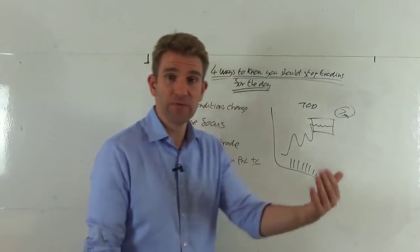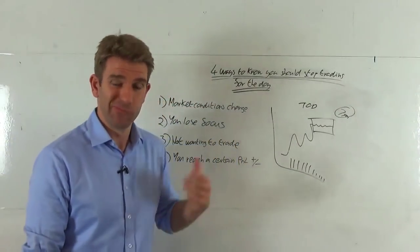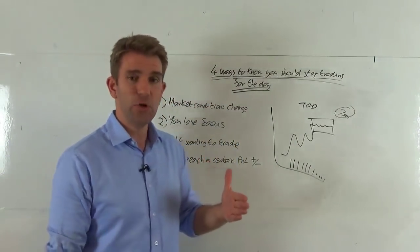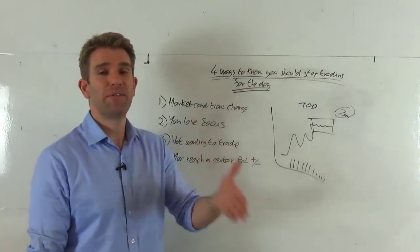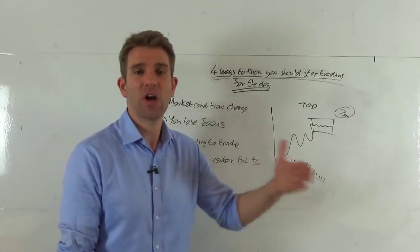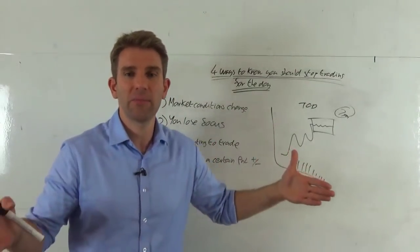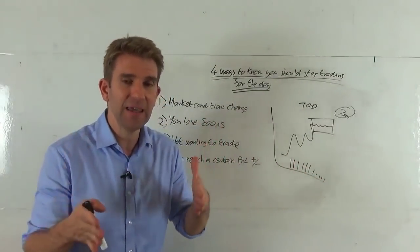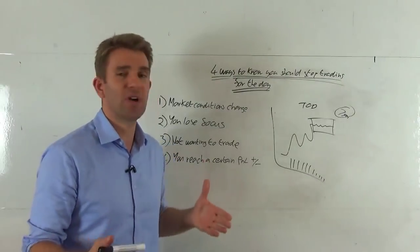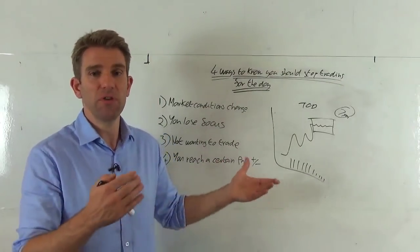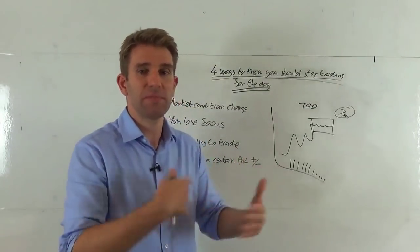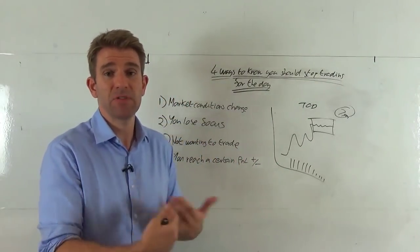Number four, you reach a certain P/L positive or negative, so stop. This is a pretty easy one, right? If you say to yourself, hey, I'm only gonna lose five hundred dollars, thousand dollars, hundred dollars, whatever the parameter may be for you that day, when you hit it you stop trading. That's a binary event, right? It happens, you get out. You know that you've planned this out, you know that that's the maximum you're prepared to lose. If it happens in the first hour, so be it.